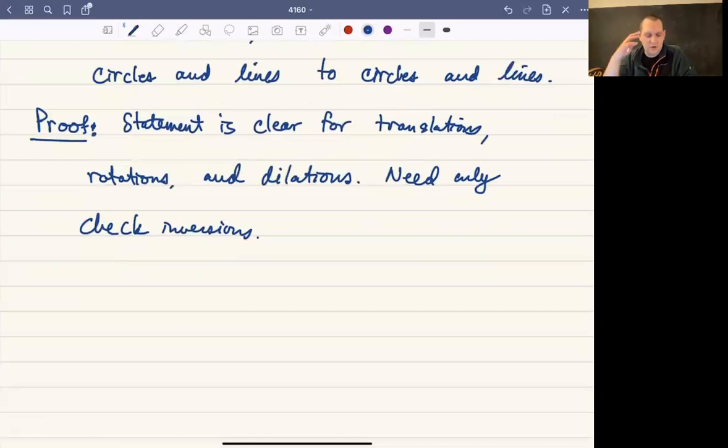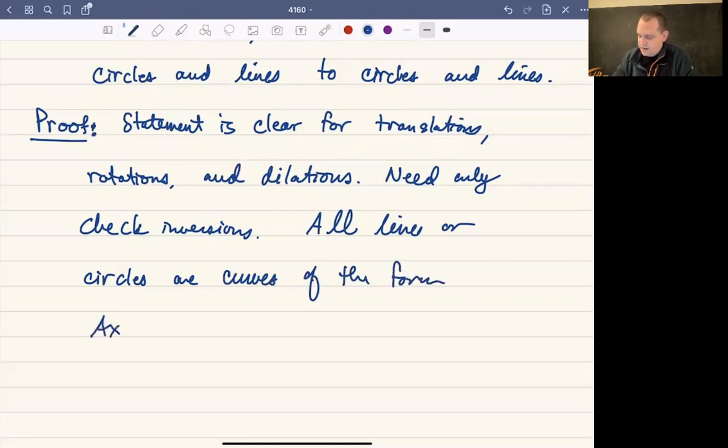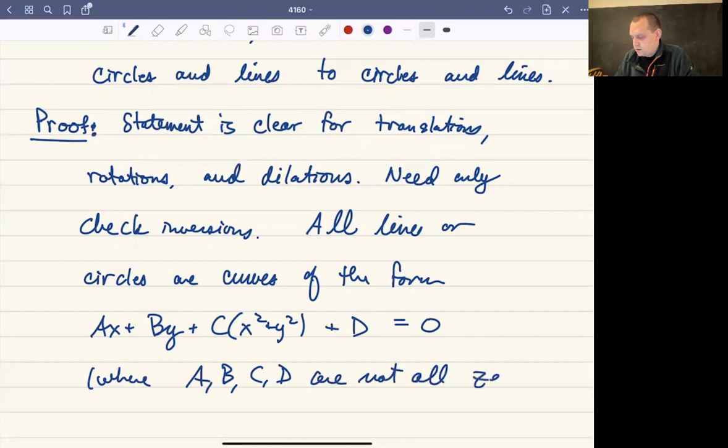Now, one bit of Calc 2 that I'm sure you all have committed to memory is that if you wanted to come up with an analytic geometry version of a line or a circle, it turns out all lines or circles are curves of the form Ax + By + C(x² + y²) + D = 0, where A, B, C, and D are not all zero. I think we want A, B, and C to be non-zero. So anyway, where A, B, and C are not all zero.